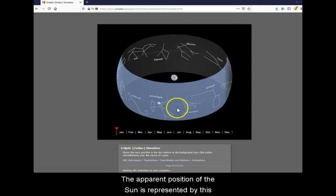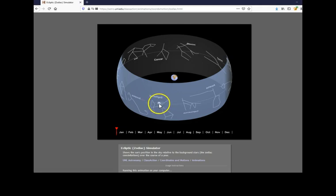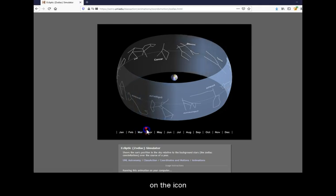The apparent position of the sun is represented by this circle along the zodiac. You can move through the calendar icon.